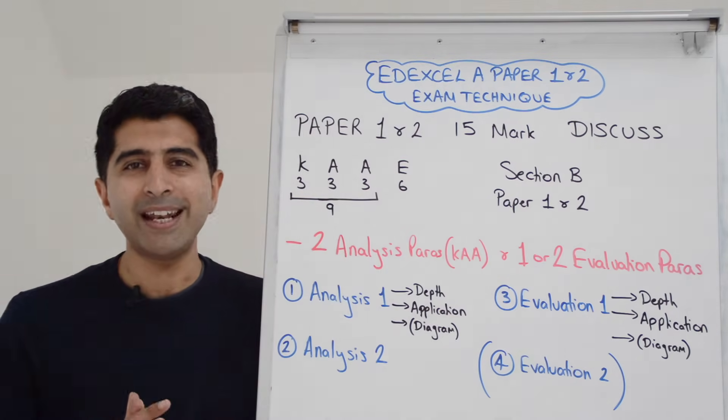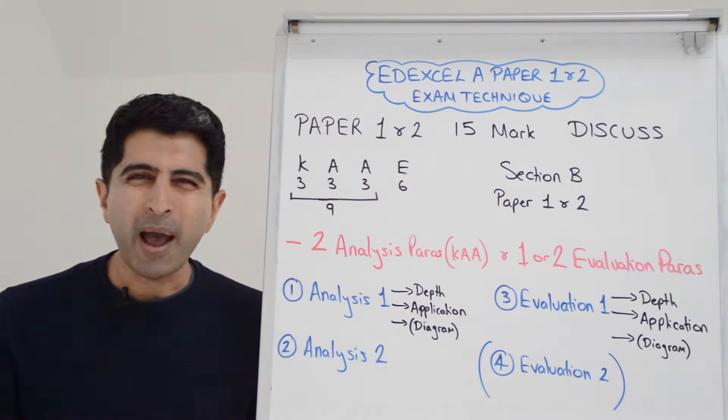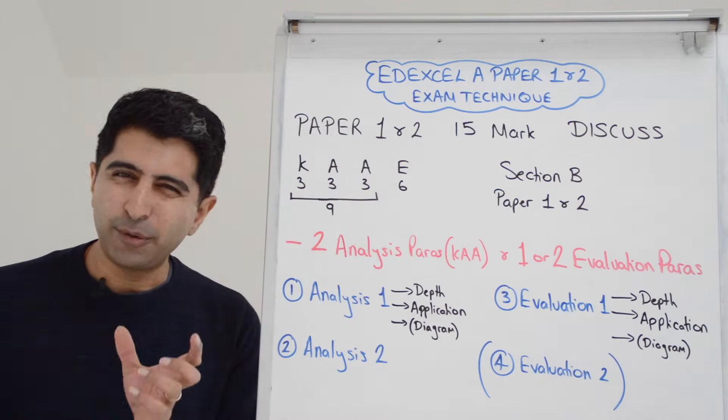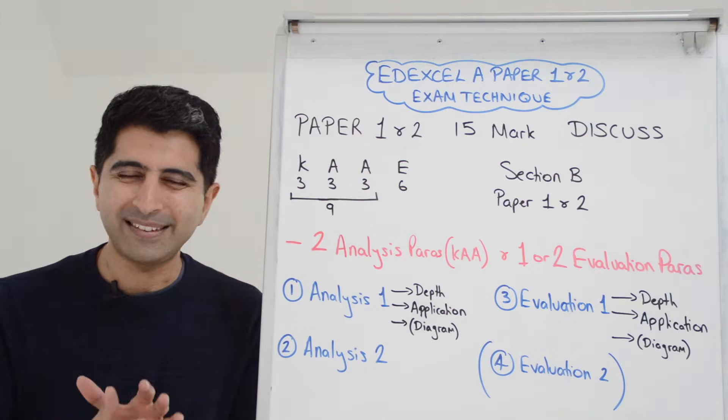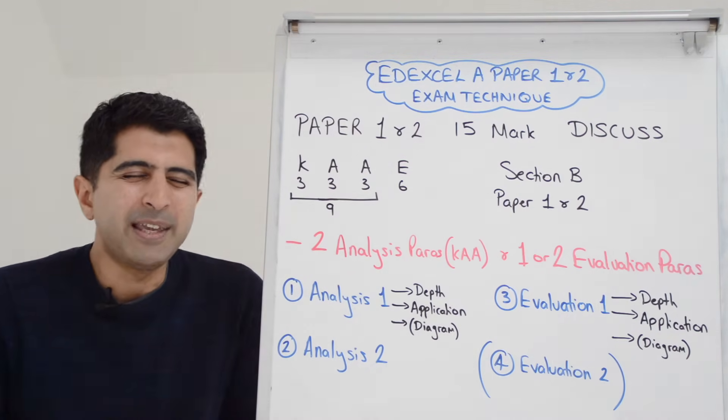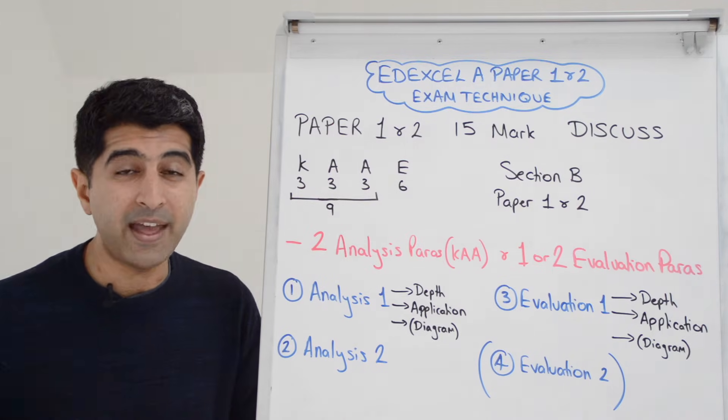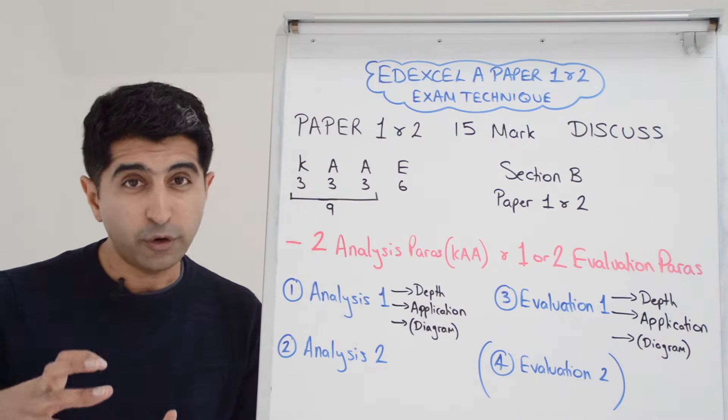But if you've written an evaluation paragraph, and in your mind it's a little bit limited, it's a little bit short, it doesn't have so many links in that paragraph, you think that's unlikely I'm going to be getting six here, the detail just simply isn't there, then you can write a second one. So you've got to judge it.